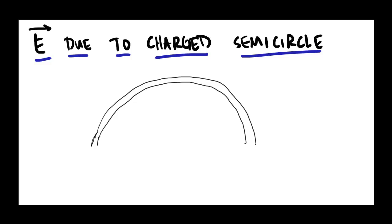In this video we're going to think about another situation where we're calculating an electric field due to some uniform, continuous charge distribution. What I want to imagine is a semi-circle — this is supposed to be a semi-circle — and it is a uniformly charged semi-circle. What I'd be curious to figure out is what is the electric field at the very center of this semi-circle? This center point is some distance r away from the charged semi-circle.